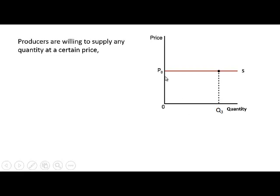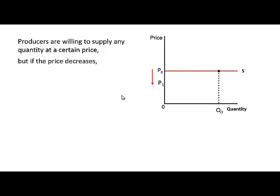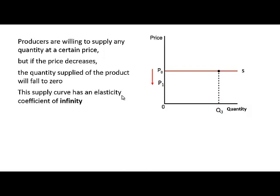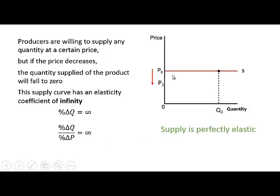When the supply curve is perfectly horizontal, it means producers are willing to supply any quantity at a certain price. If the price decreases, for example to P1, the quantity supplied will fall to zero. We say that the supply curve has an elasticity coefficient of infinity. The percentage change in quantity is equal to infinity, and therefore price elasticity of supply is also equal to infinity — the supply is perfectly elastic.